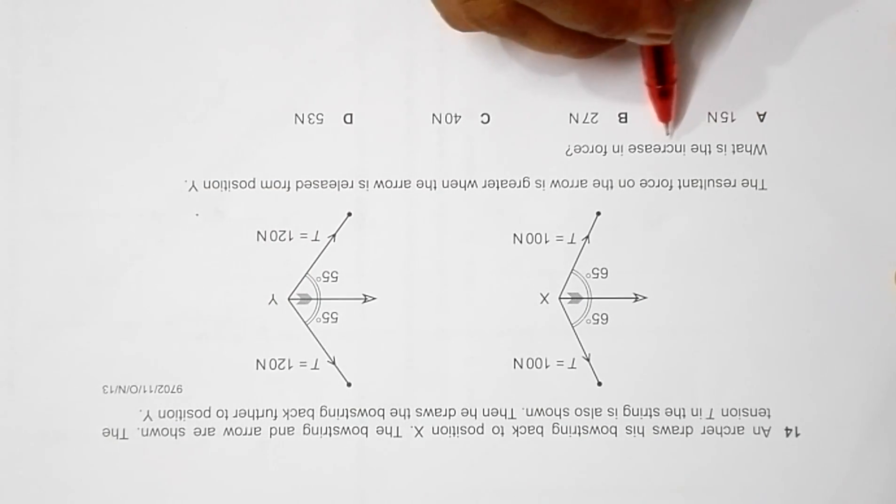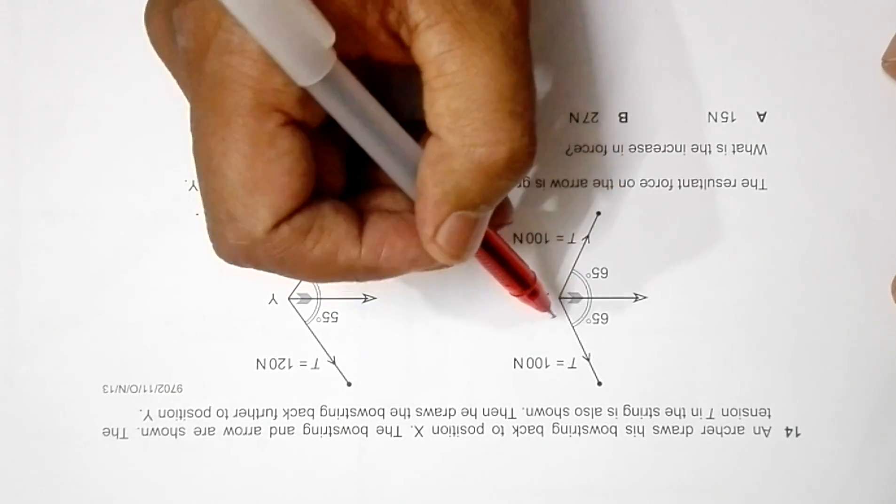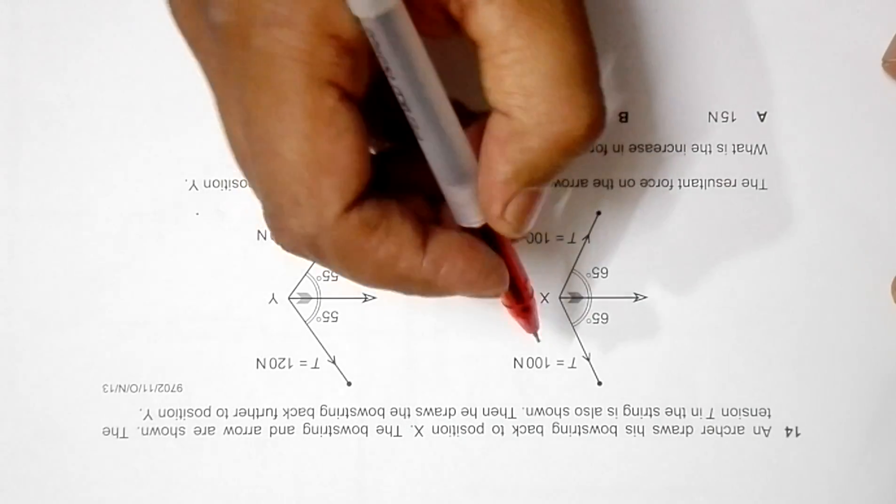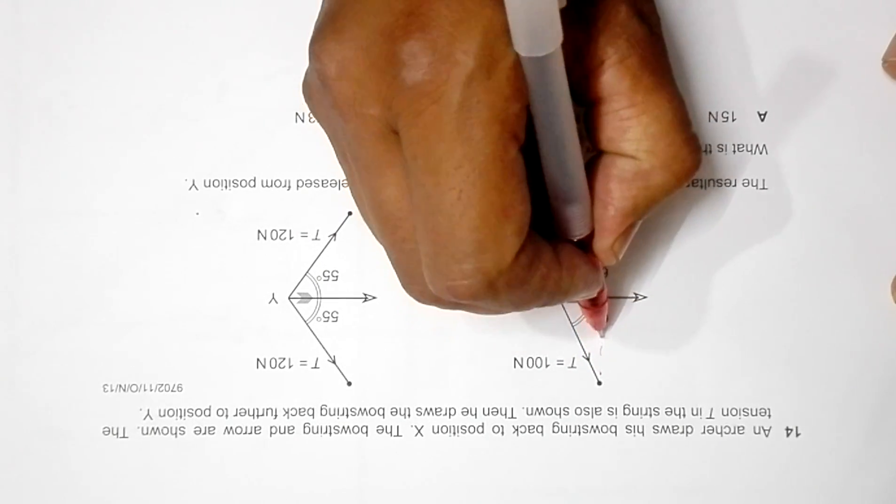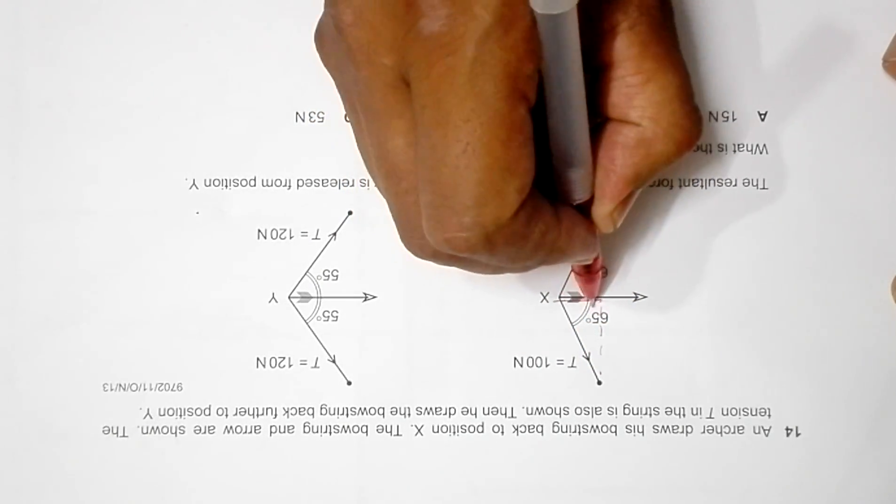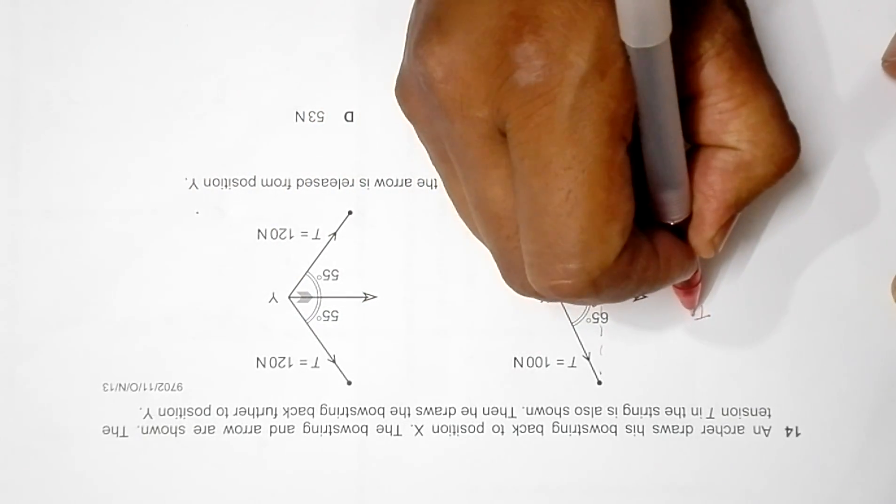So what we can do is we have to find the resultant force in this case and in this case. In the first case, the resultant force will be, since it is tension T here, its component in this direction will be T cos of 65 degrees.